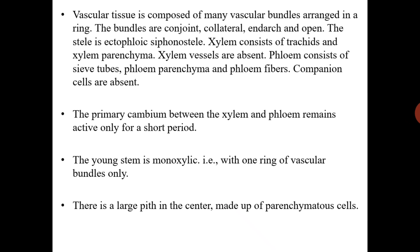Xylem consists of tracheids and xylem parenchyma — xylem vessels are absent. Phloem consists of sieve tubes, phloem parenchyma, and phloem fibers; companion cells are absent in phloem. The primary cambium between the xylem and phloem remains active only for a short period. The young stem is monoxylic, that is, with a single ring of vascular bundles.